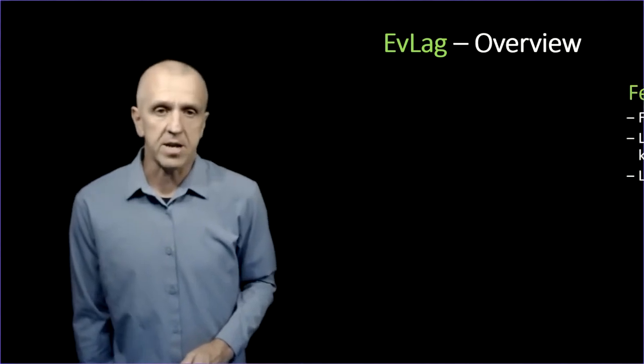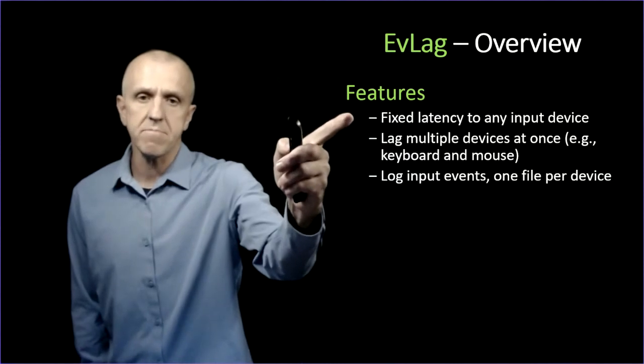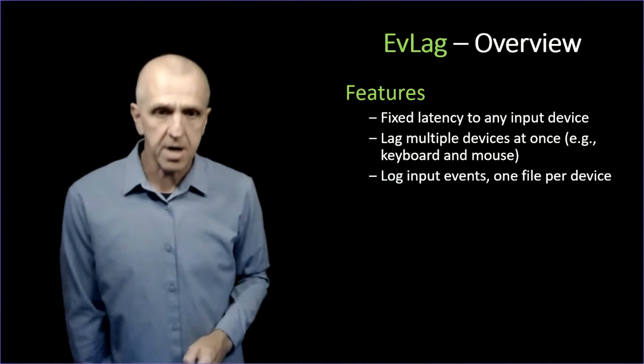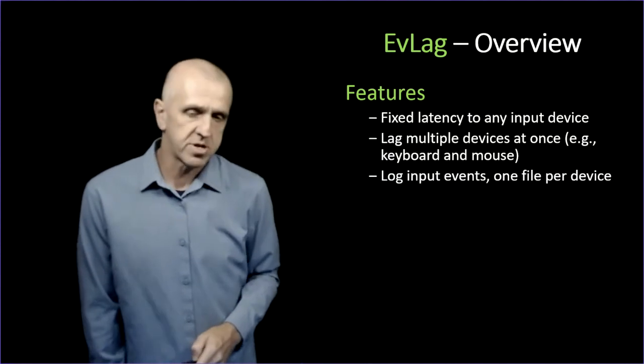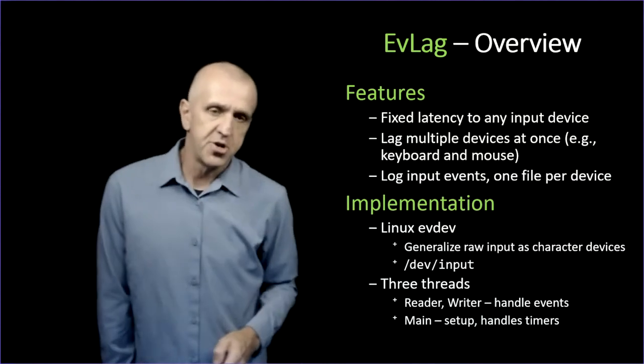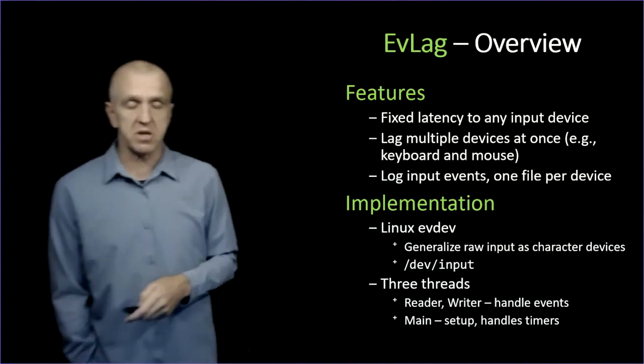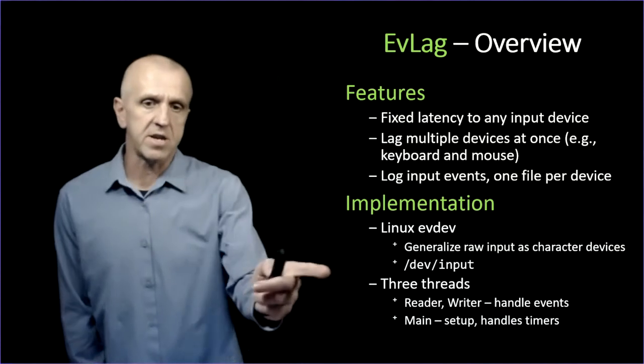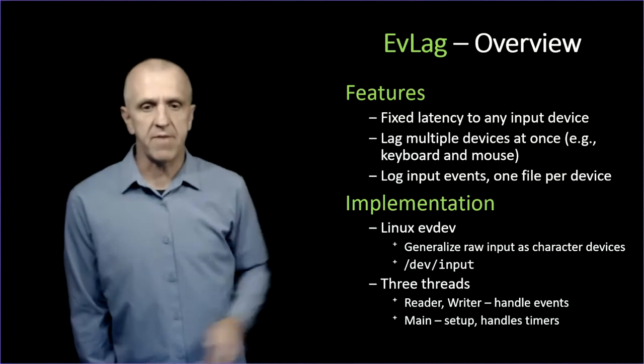An overview of what EvLag does: it provides fixed latency for any Linux input device. You can lag more than one device at a time, lag the keyboard and the mouse, and you can log the input events one file per device for post-running analysis. It's implemented using Linux EvDev, which is generalized raw input as character devices. You can read it as a character device as a file, dev/input with different input devices there.